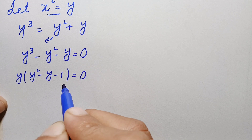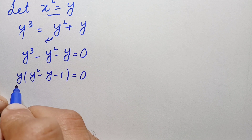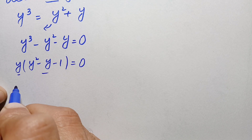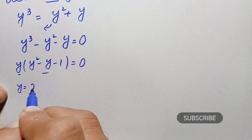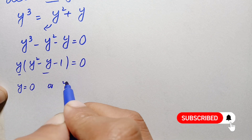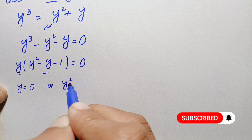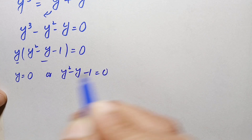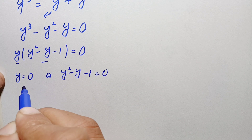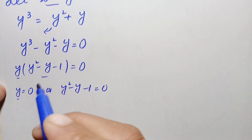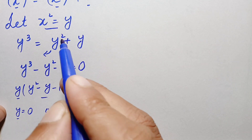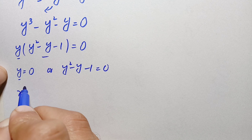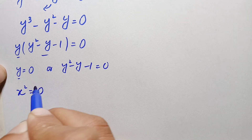Since the product of these two expressions is zero, either y = 0, or y² − y − 1 = 0. From the first case, y = 0. Going back to our substitution y = x², we have x² = 0.